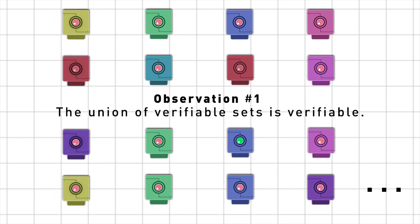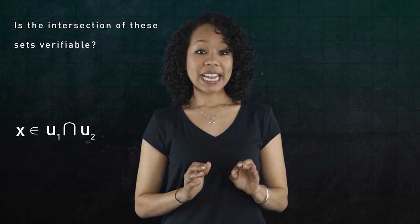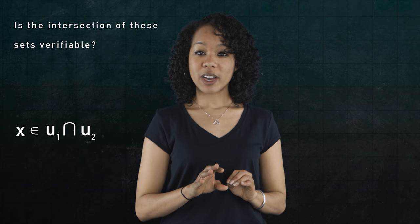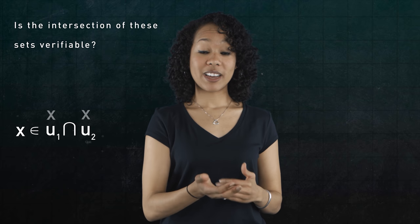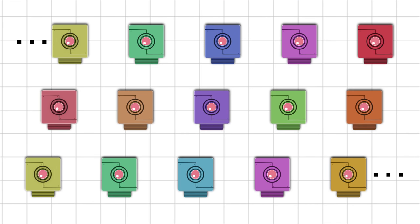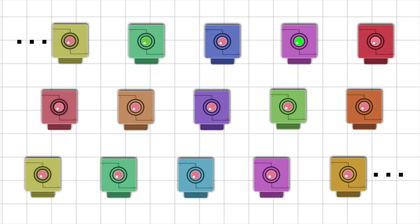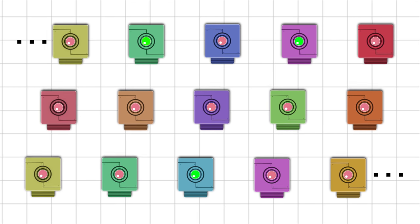That's observation number one. Now, what if we take the intersection of these sets? Is the resulting set verifiable? A number x is in the intersection of u1 and u2 if it lies in both u1 and u2. So if we have infinitely many of these sets, can we verify when a number lies in u1 and u2 and u3 and so on? To do that, we'd have to input a number into each machine and wait for all of them to terminate. But this would take an infinite amount of time. The process would never end.